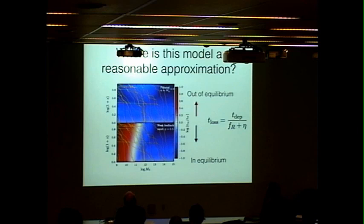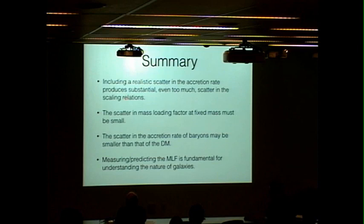Okay, so my summary is, including a realistic scatter in the accretion rate can produce a substantial scatter in the star-forming main sequence and these other scaling relations, and maybe even too much. The scatter in mass loading factor at fixed mass has to be small to avoid a not-observed correlation between the star formation rate and the metallicity. The scatter in the accretion rate of baryons may be smaller than that of the dark matter. So it seems like the intrinsic scatter that the galaxy is seeing needs to be smaller than what we would expect from dark matter. And measuring and predicting the mass loading factor is fundamental for understanding the nature of these galaxies, especially dwarves. Thank you.